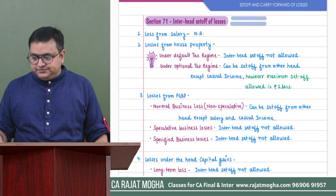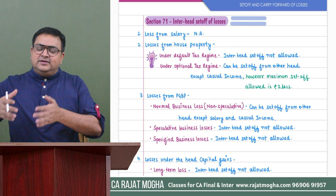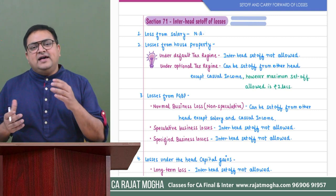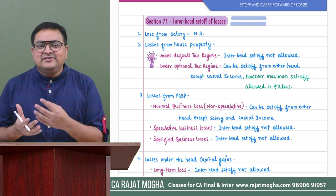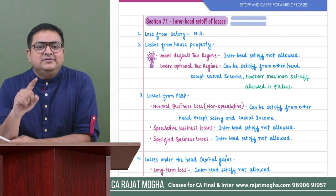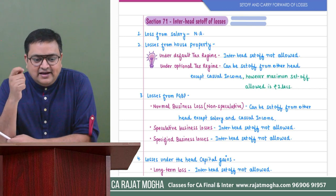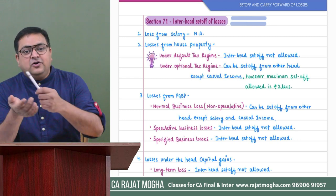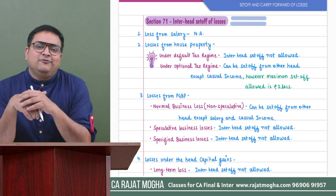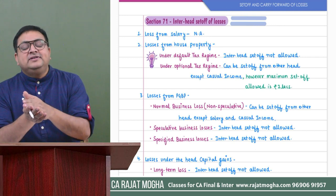Now, what is inter-head set-off? If a person has losses in house property, can it be set off from any other head? Here there is an important amendment. If the assessee is following the default tax regime, the answer is simply NO — house property losses cannot be set off from other heads under the default tax regime.